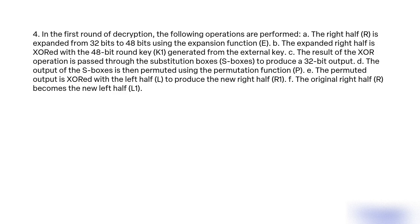In the first round of decryption, the following operations are performed. A: The right half R is expanded from 32 bits to 48 bits using the expansion function E. B: The expanded right half is XORed with the 48-bit round key K1 generated from the external key. C: The result of the XOR operation is passed through the substitution boxes (S-boxes) to produce a 32-bit output. D: The output of the S-boxes is then permuted using the permutation function P. E: The permuted output is XORed with the left half L to produce the new right half R1. F: The original right half R becomes the new left half L1.